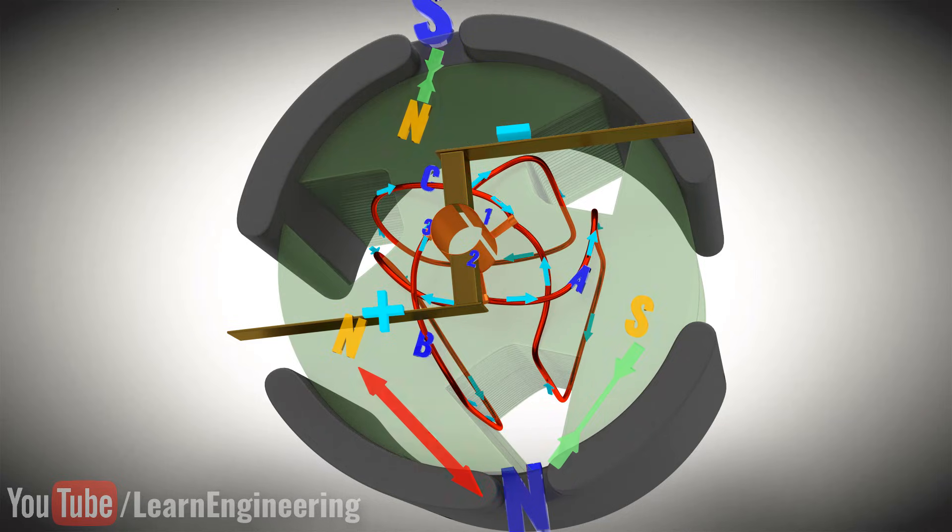However, as the rotor turns, the brushes come in contact with different commutator rings. This alters the whole rotor current flow, and this simple trick makes the rotor turn again.